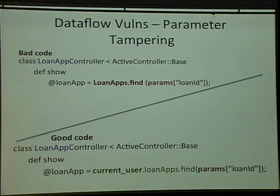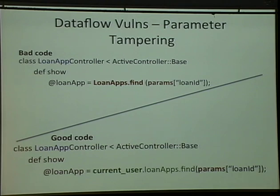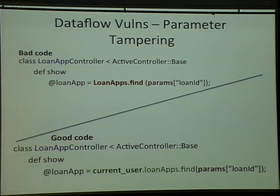Parameter tampering: every framework tries to help developers be more productive. If you look at the browser URL — www.server.com/loanID equals some value — what can they do? Params is a request parameter. They're going to change the number from one to two, three, four, five, six, seven and see whose loan application comes up. You want to tell developers to limit what loan IDs are valid so the only ones they can see are related to the user themselves.